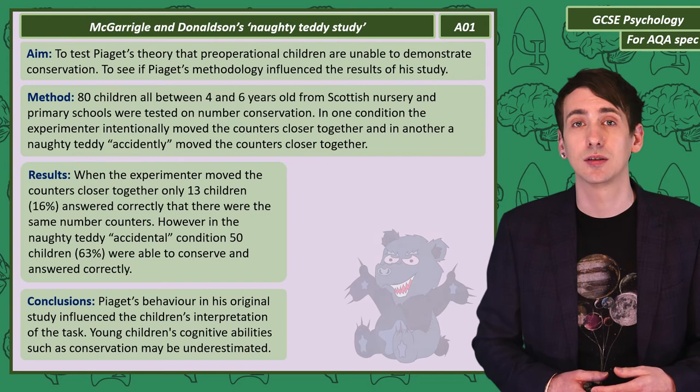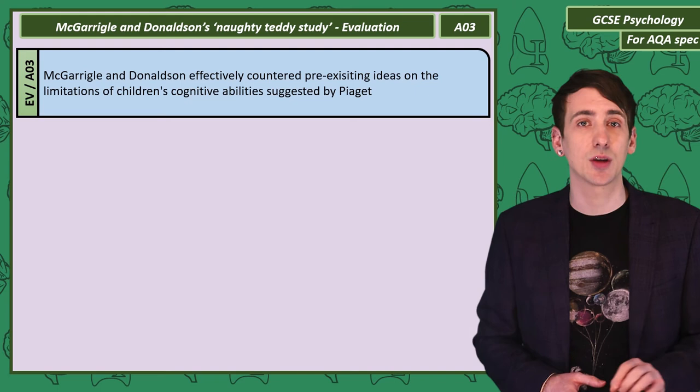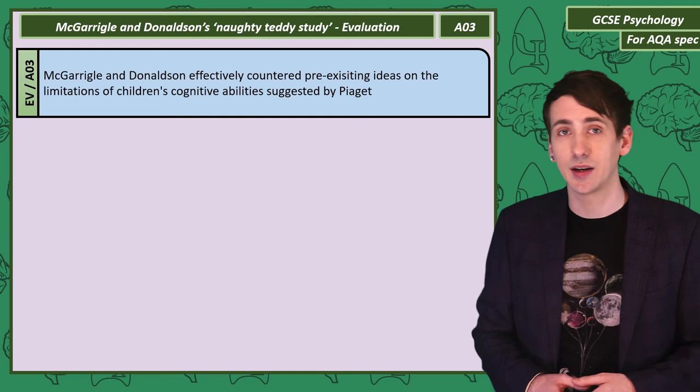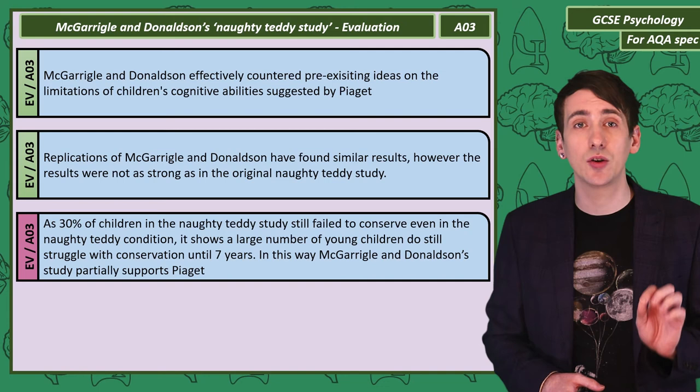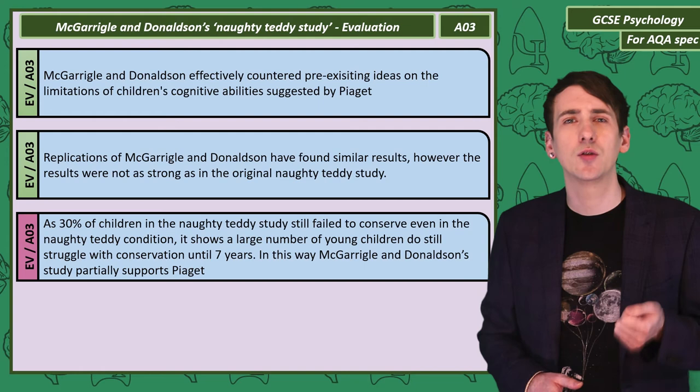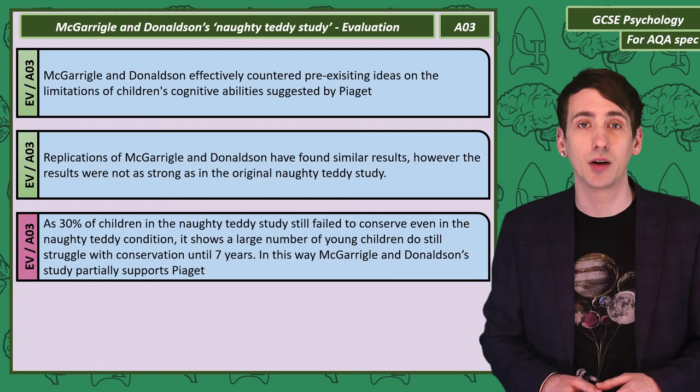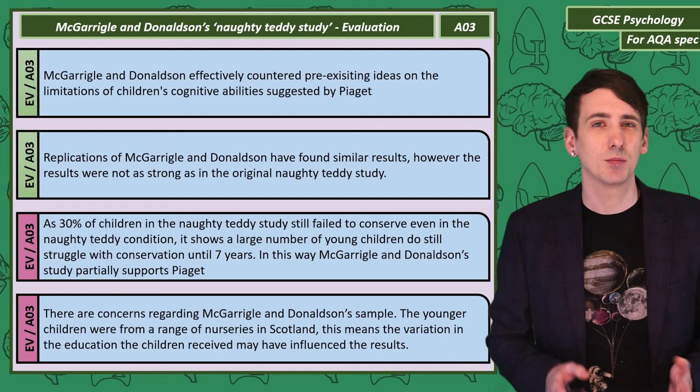When evaluating McGarrigle and Donaldson, the positive is that they successfully challenged a pre-existing view on the limitations of children's cognitive development based on Piaget's ideas. This study has also been replicated by other researchers, however the results were not quite as strong as the original Naughty Teddy study. Notably, 30% of children were still unable to conserve in the Naughty Teddy condition, showing that a large number of children do struggle with conservation until seven — this is partial support for Piaget's theories. The samples were all from Scottish nurseries, so variation in early years education between nurseries could have influenced the results.